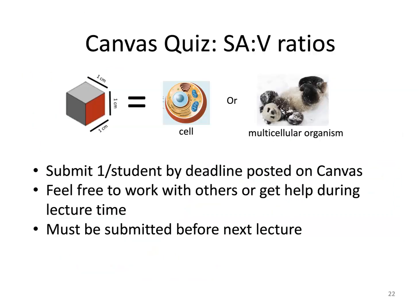To help clarify these concepts, there is a surface area to volume ratio quiz activity on Canvas. You'll look at cube- and rectangular-shaped organisms of different sizes and figure out what happens to the surface area to volume ratio as they change size and shape. Please submit it one per student by the deadline posted on Canvas, before the next lecture.